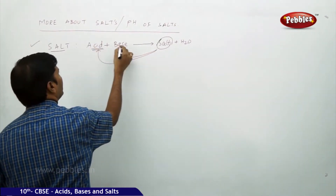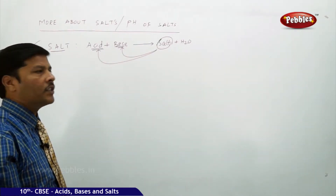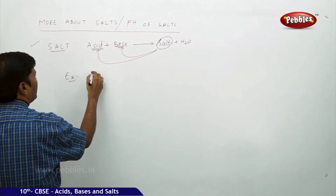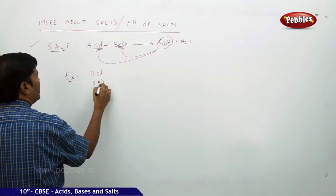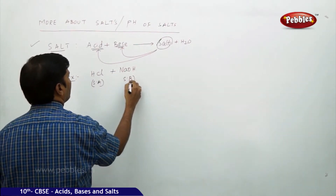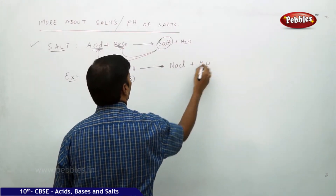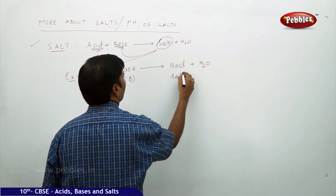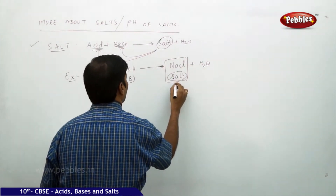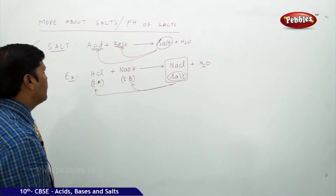Every salt contains a small amount of acidic nature and a small amount of basic nature in it. For example, HCl is a strong acid and NaOH is a strong base; they react to give NaCl plus H2O. This NaCl is a salt of a strong base and a strong acid.